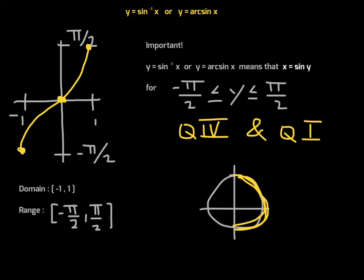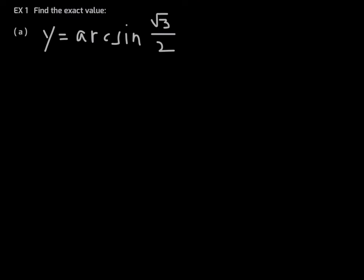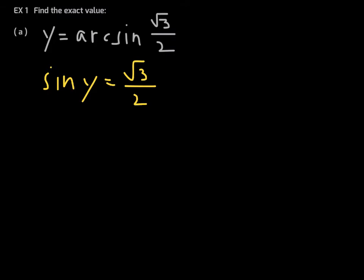Example: find the exact value of y equals arc sine of √3/2. This means y is the angle whose sine is √3/2, or equivalently, sine of y equals √3/2. The value √3/2 is positive, so we cannot be in quadrant four — sine is negative there. Therefore y must come from quadrant one.